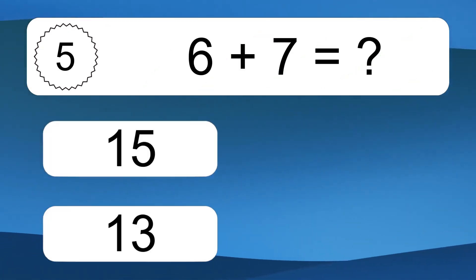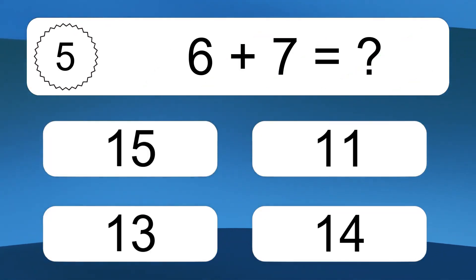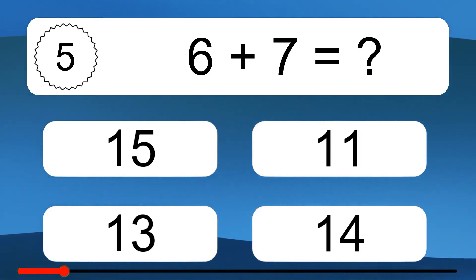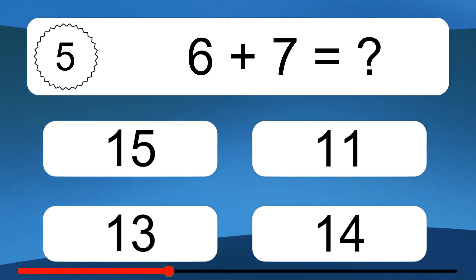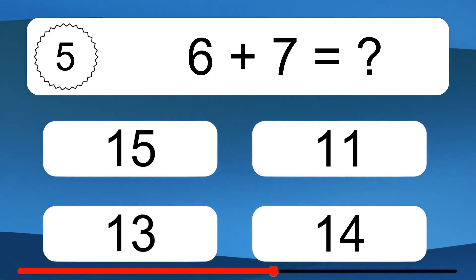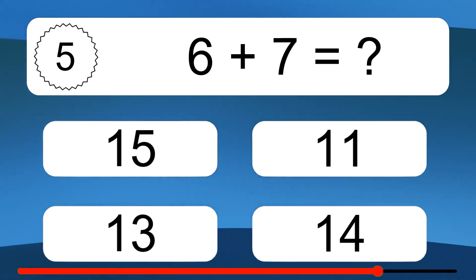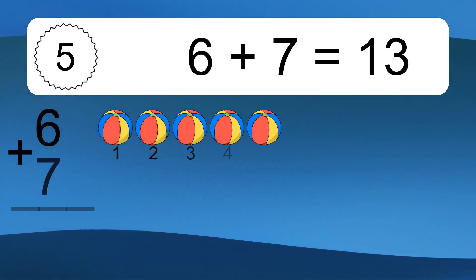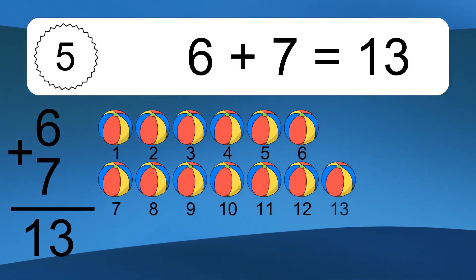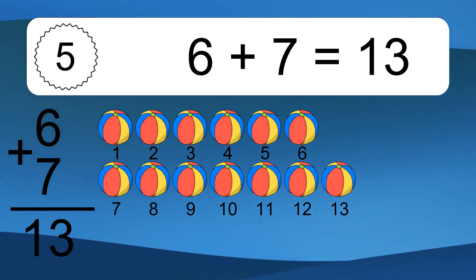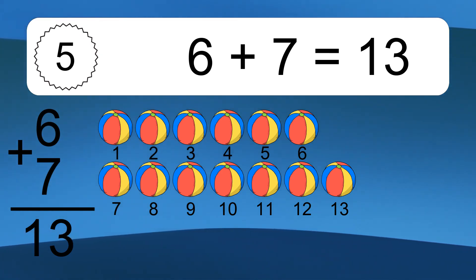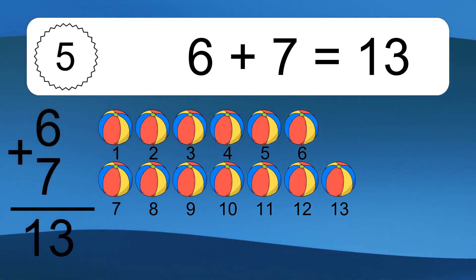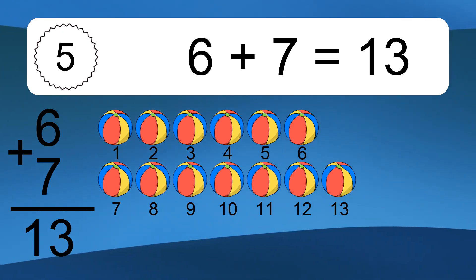6 plus 7 equals what? 6 plus 7 equals 13. Let's count it: 1, 2, 3, 4, 5, 6, 7, 8, 9, 10, 11, 12, 13.